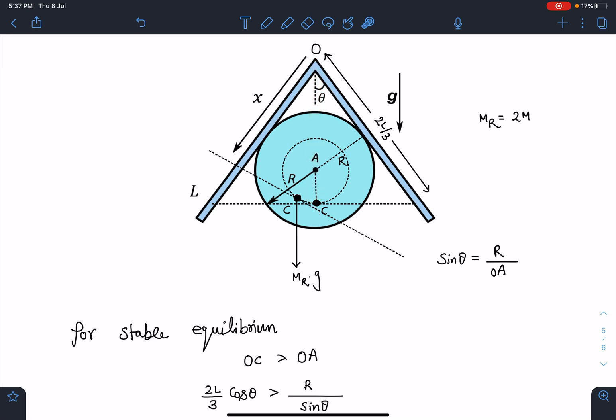Again guys, the problem is giving the feel that entire angle is theta but what I meant was this angle was theta. I am doing the calculation as per that, so I hope you can understand. You can see this part carefully that this distance is 2L by 3 and its cos theta component is this OC. It should be greater than OA.